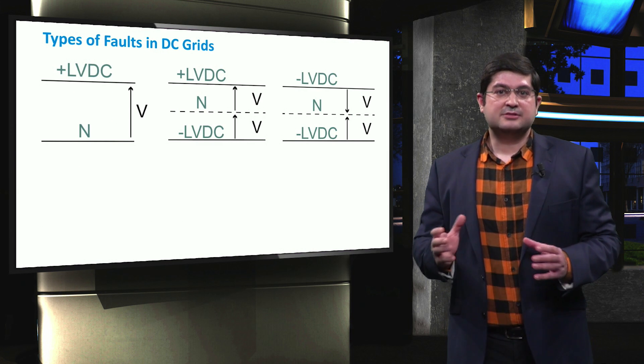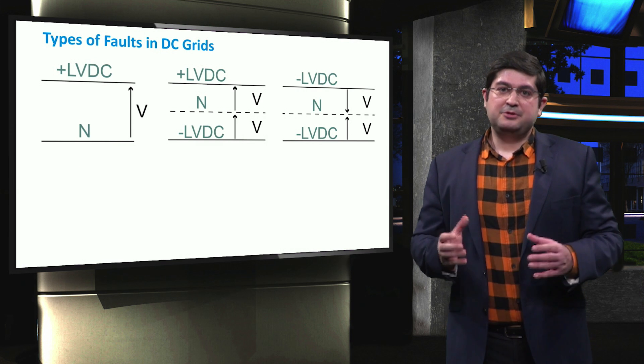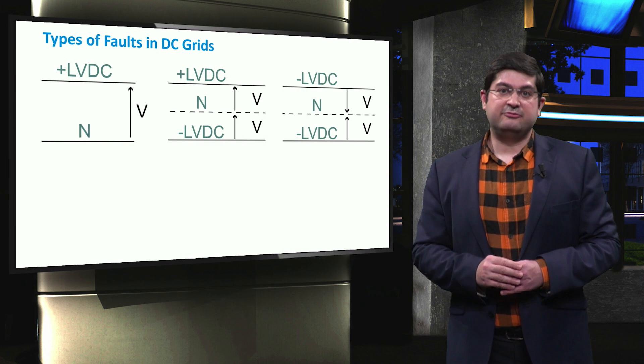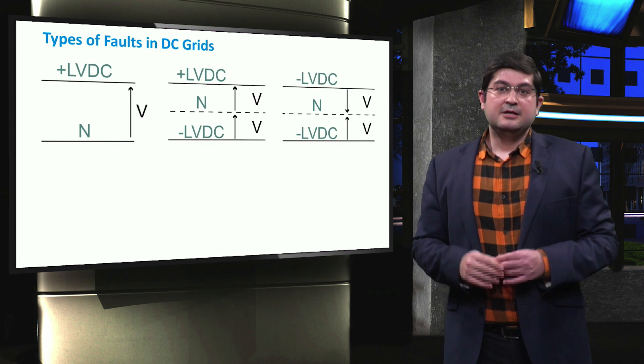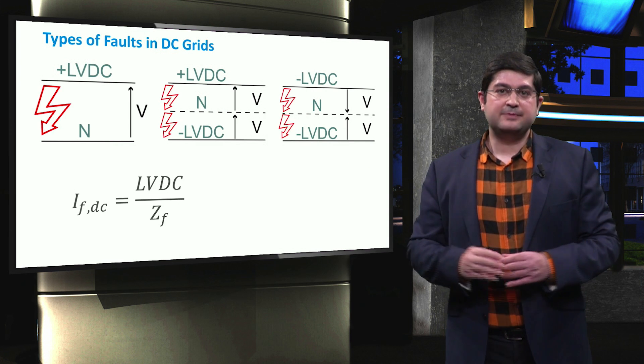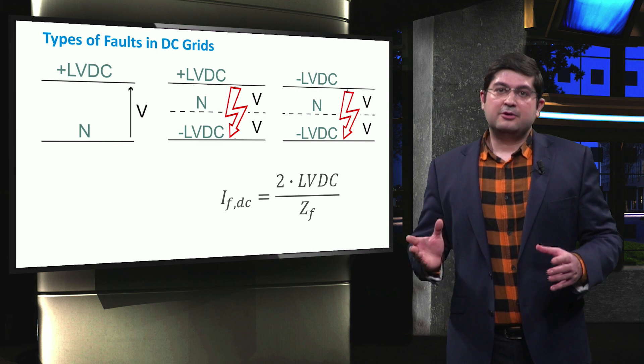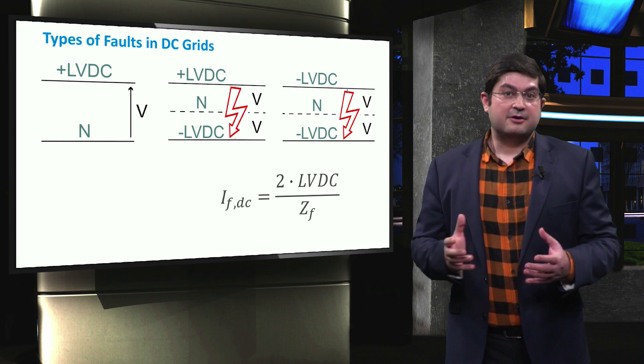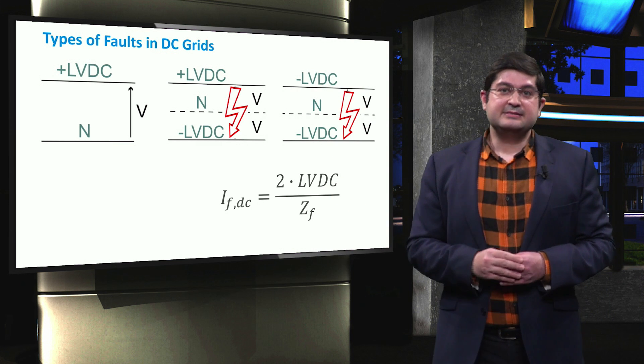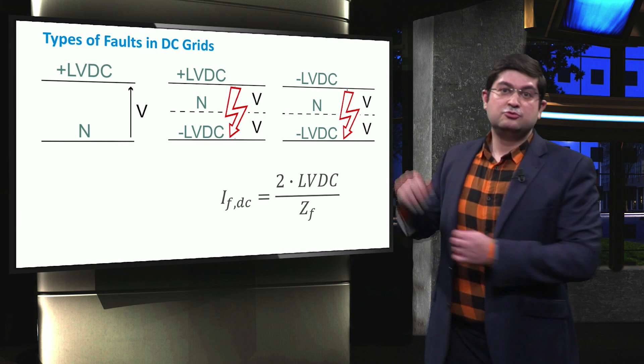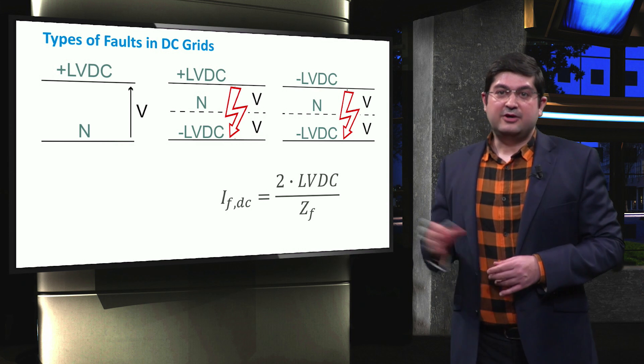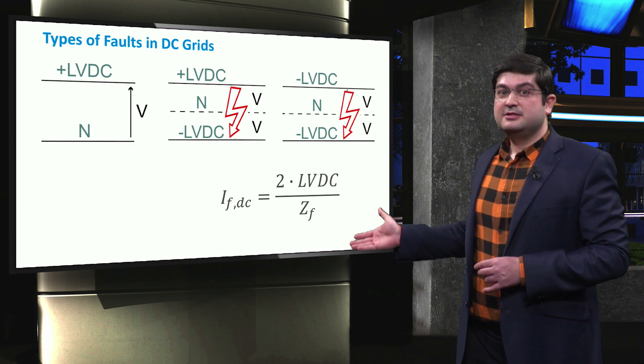Now, let's have a look into the various types of faults in a DC grid. In the previous weeks, we had introduced three DC connection types of monopolar, bipolar, and homopolar types. Two types of fault can occur in these connections. The first one is the fault from the pole to the ground. In these cases, to simplify, the line impedance is neglected and the fault DC current can be similarly calculated dividing the DC voltage LVDC by the fault impedance ZF. In the bipolar and homopolar types, the second type of fault can occur from one pole to the other pole. In this case, the voltage across the fault is equal to 2 times LVDC. Therefore, the fault current is equal to 2 times LVDC divided by fault impedance.